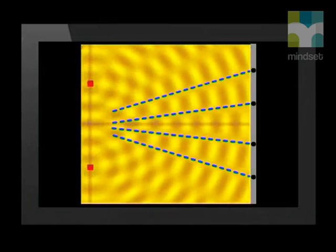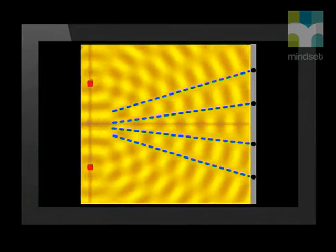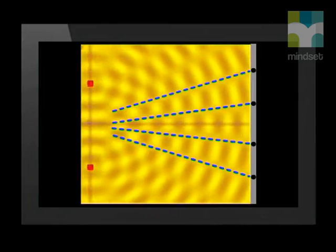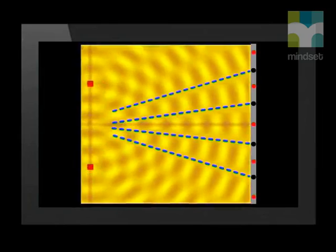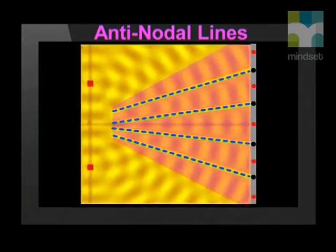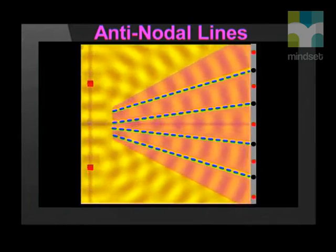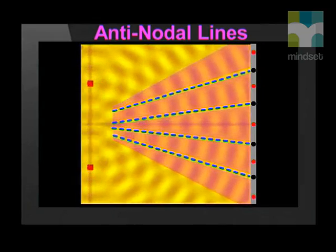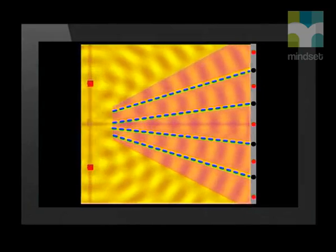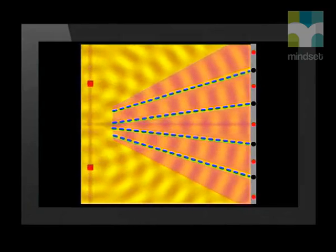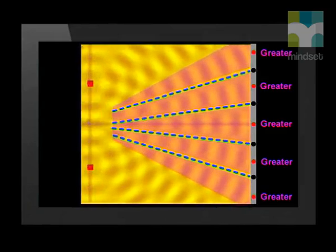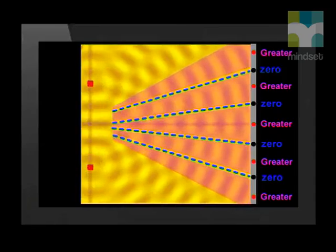At other places, crests meet crests or troughs meet troughs and they double the amplitude. These places line up and we find these antinodal lines where the amplitude is a maximum. As the waves travel forward and hit a screen, we can see these places with greater amplitude and zero amplitude.